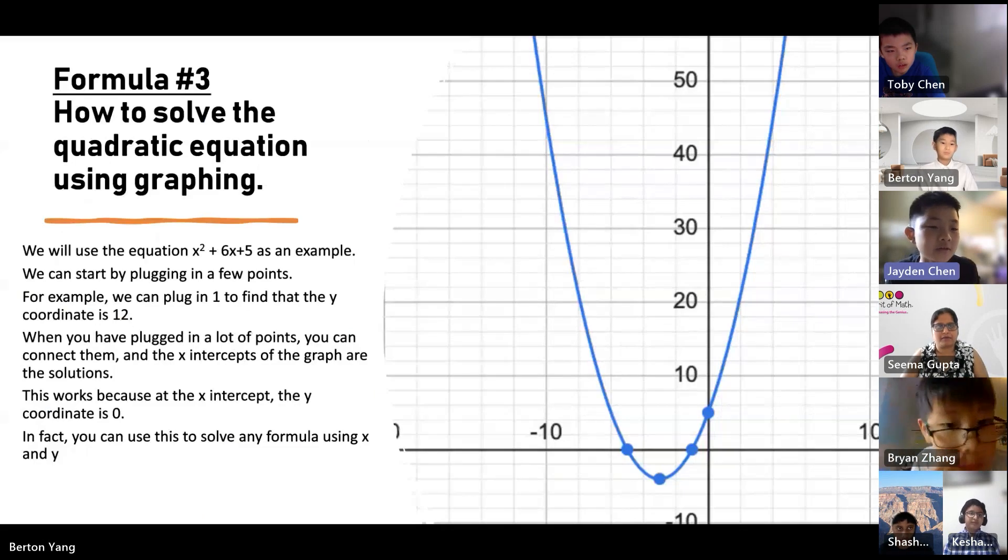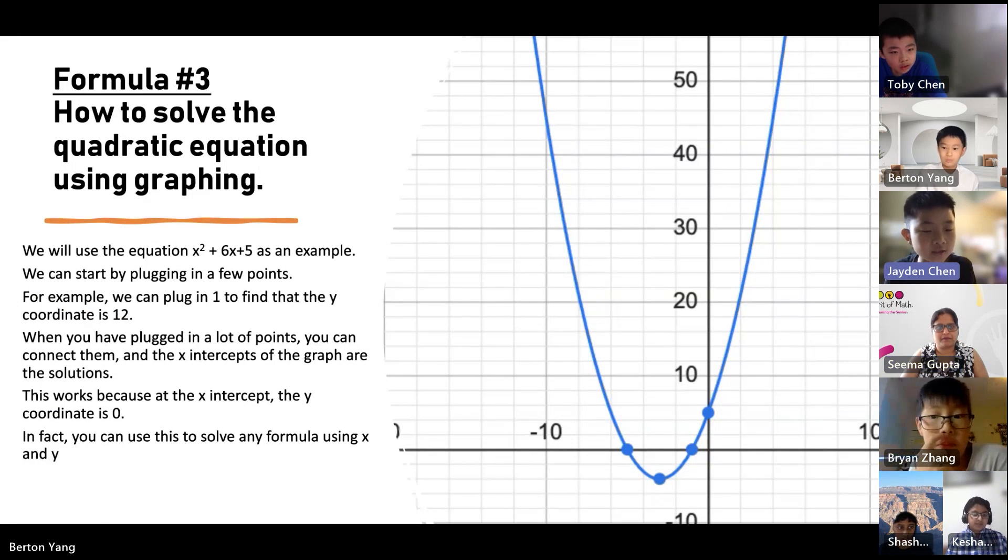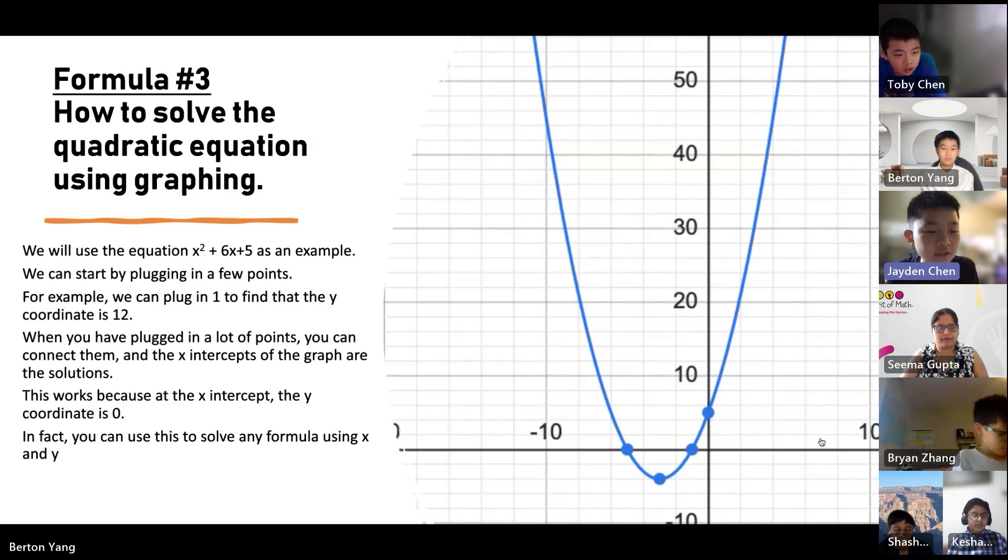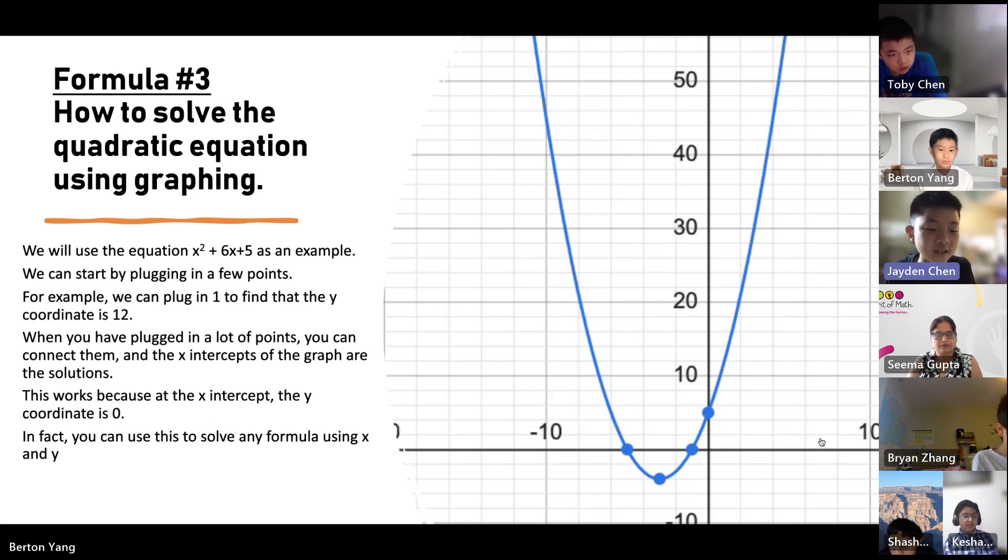Formula number three. How to solve the quadratic equation using graphing. We will use the equation x squared plus 6x plus 5 as an example. We can start by plugging in a few points. For example, we can plug in 1 to find that the y-coordinate is 12. When you have plugged in a lot of points, you can connect them and the y-intercepts of the graph are the solutions. This works because at the x-intercept, the y-coordinate is 0. In fact, you can use this to solve any formula using x and y.